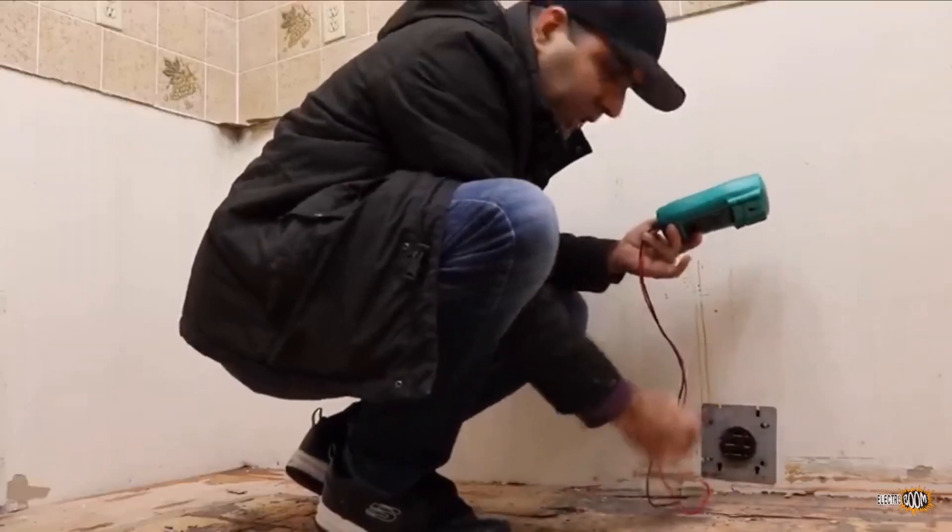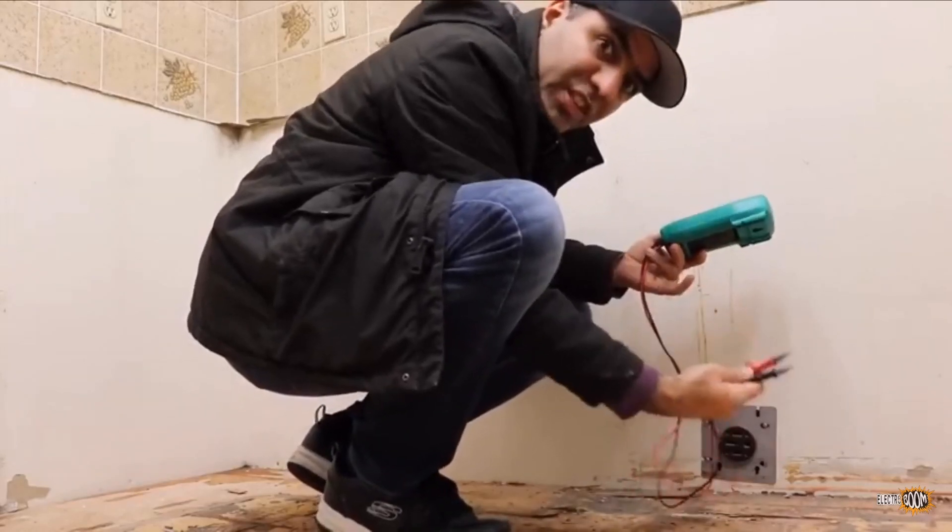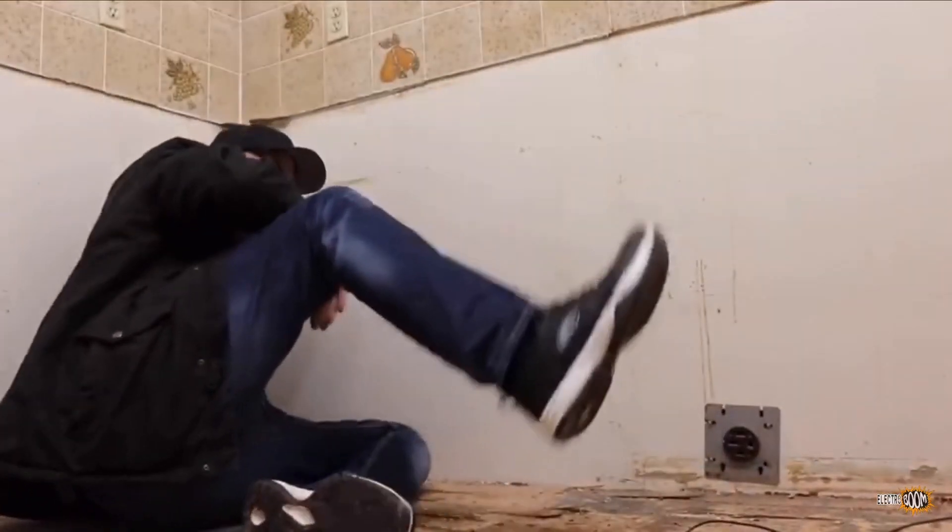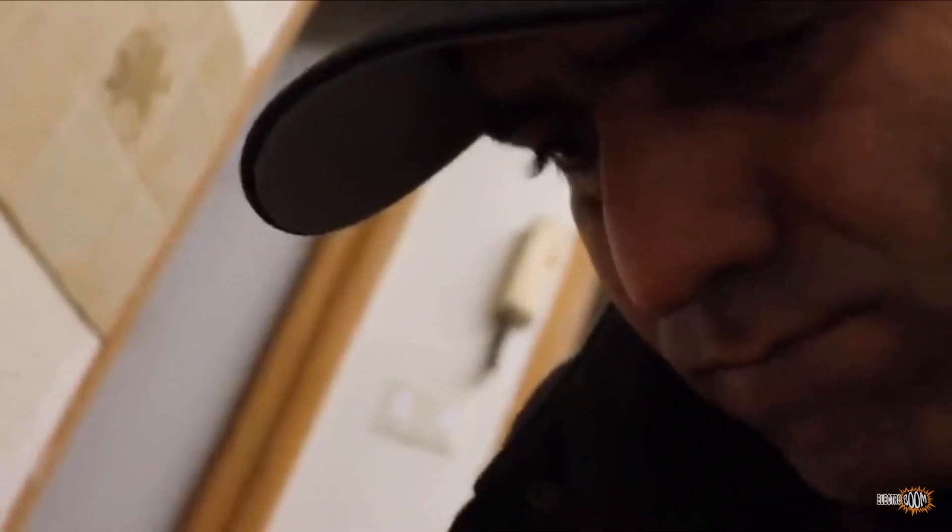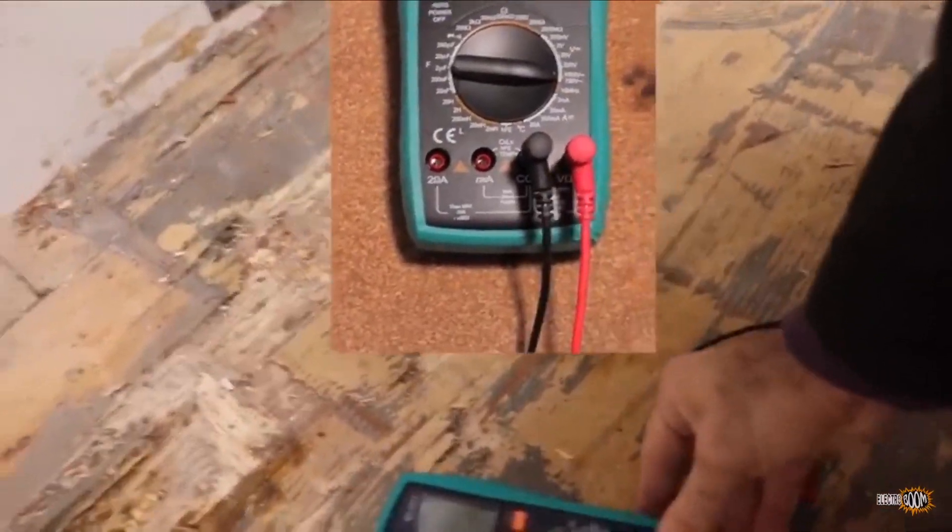This is the oven outlet. The voltage reading here will show us if the phases are 120 degrees out or 180 degrees out. Let's change. Holy fuck! The meter was on current. Always make sure it is on voltage before you measure voltage.